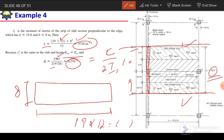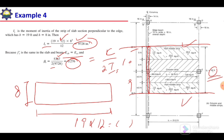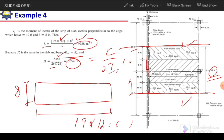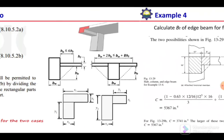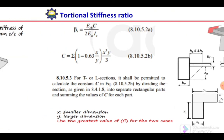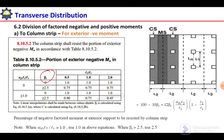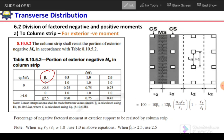In this way we can calculate beta_t. Once we have the value of beta_t, we use it to select the coefficients for the moment distribution of exterior negative moment to the column strip.